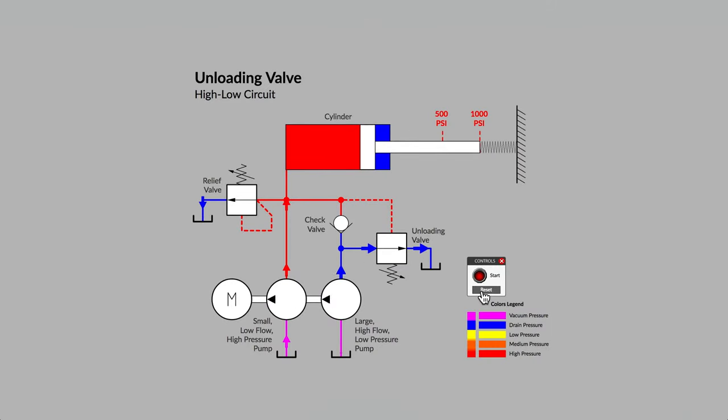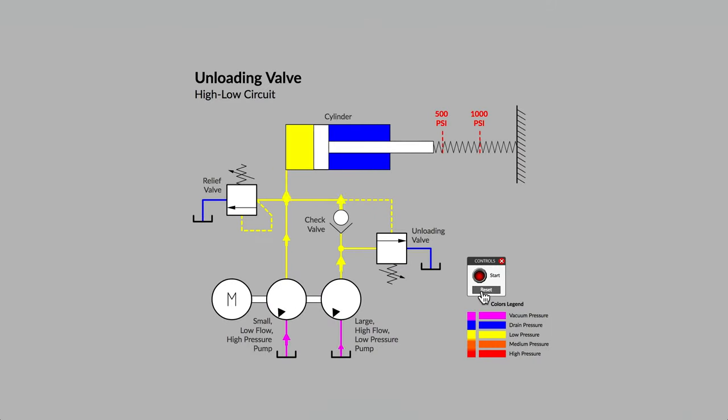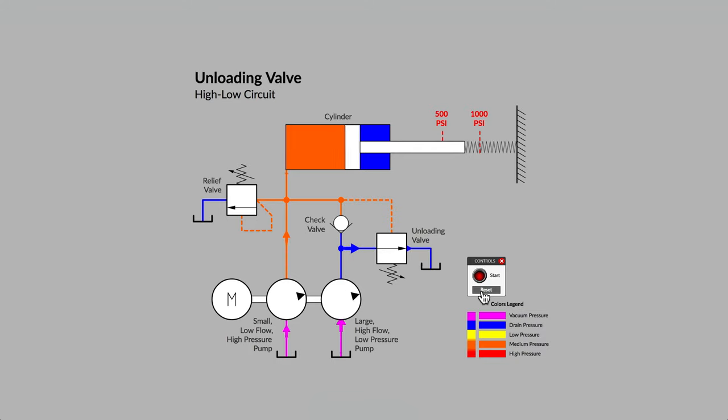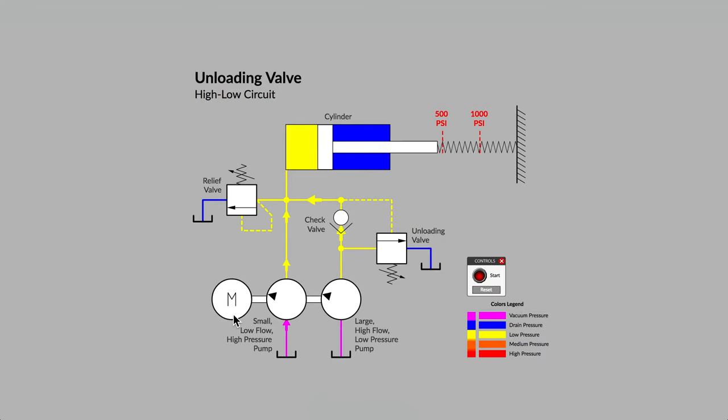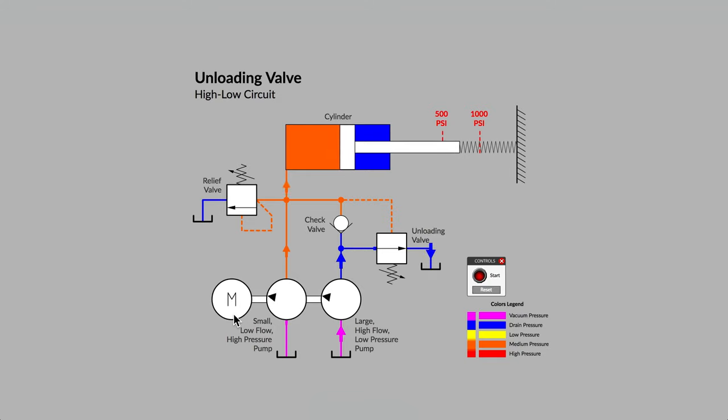It is not uncommon to find an unloading valve in use with fixed displacement pumps. An unloading valve can be used to create what is sometimes known as a high-low circuit, and it is also used to minimize the power required from the prime mover, an electric motor in this case, when the system pressure gets to a level that might cause the motor to stall.